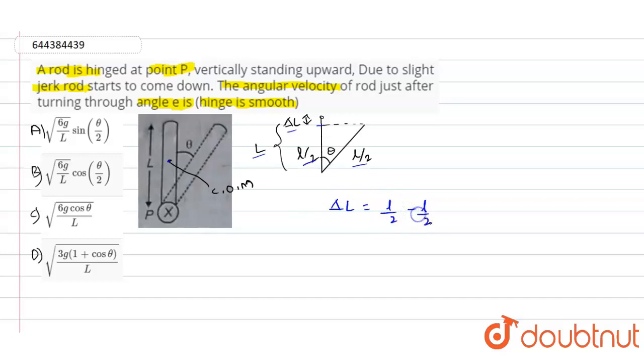Okay, so we can write I/2 × ω² will be equals to mg × ΔL, and I/2 × ω² we can write it as m × L²/3 × ω².